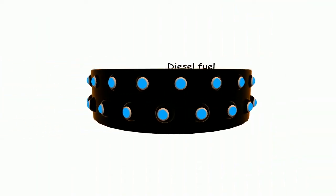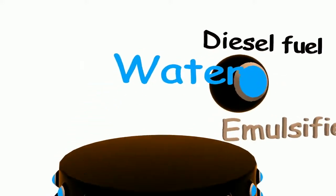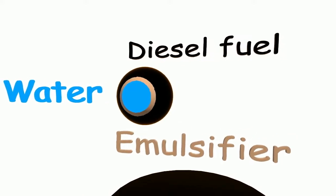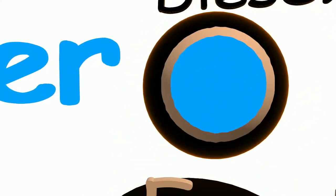When homogenization process is complete, the droplets look as follows: water in the center, fuel on top of the water, and the emulsifier between them, forming a membrane binding these substances.